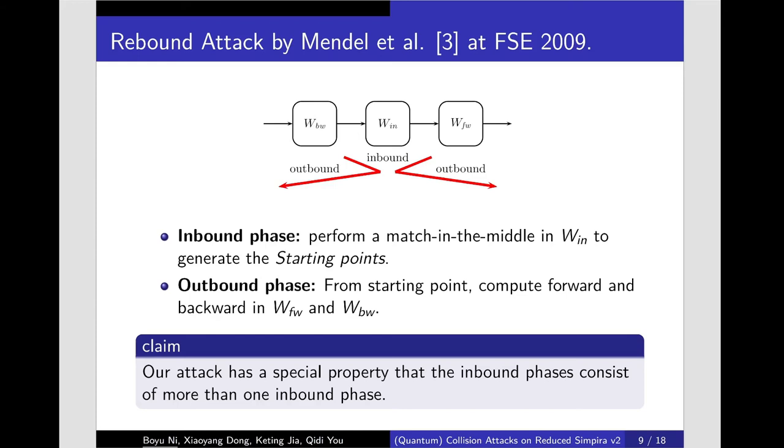Which will act as the starting points from the outbound phase. In the outbound phase, the starting points of the inbound phase are computed backward and forward through W_BW and W_FW to obtain a pair of values which satisfy the differential trail. Suppose the probability of the inbound phase is P, then we have to prepare 1/P starting points in the inbound phase to expect one pair conforming to the differential trail of the outbound phase. Hence.